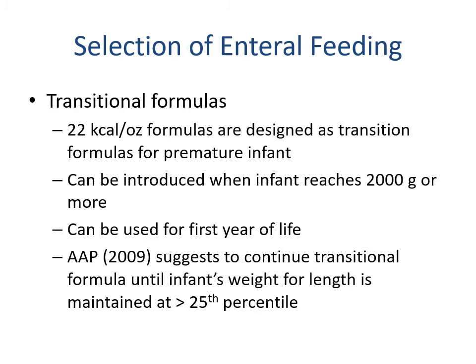Transitional formula at 22 calories per ounce is designed as a transition formula for the premature infant and can be introduced when the infant reaches 2,000 grams or more — approximately 4.4 to 5 pounds. This can be used for the first year of life. The American Academy of Pediatrics recommends continuing transitional formula until the infant's weight for length is above the 25th percentile — essentially continuing extra calories until they've caught up to at least the 25th percentile.